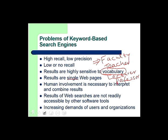Another issue is that results are single webpages. In many cases, our required information is spread across many pages — we want to synthesize information on a particular topic. There is no inherent mechanism in search engines to actually answer our questions or give us our required information. Human involvement is necessary to interpret and combine the results. We have to do manual effort to get information or to complete any task using search engines.